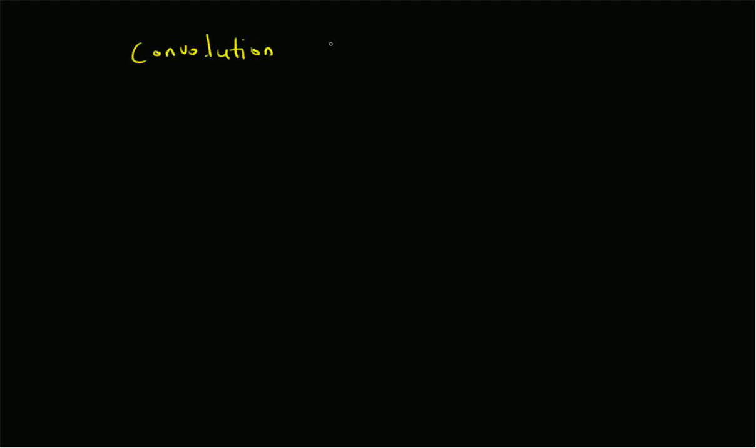Hello, welcome. In this short video, let us look at a MATLAB implementation for computing the convolution of signal x[n] and impulse response h[n], which have arbitrary time support — that is, they need not start at time n equal to 0. So, convolution of signals with arbitrary support.